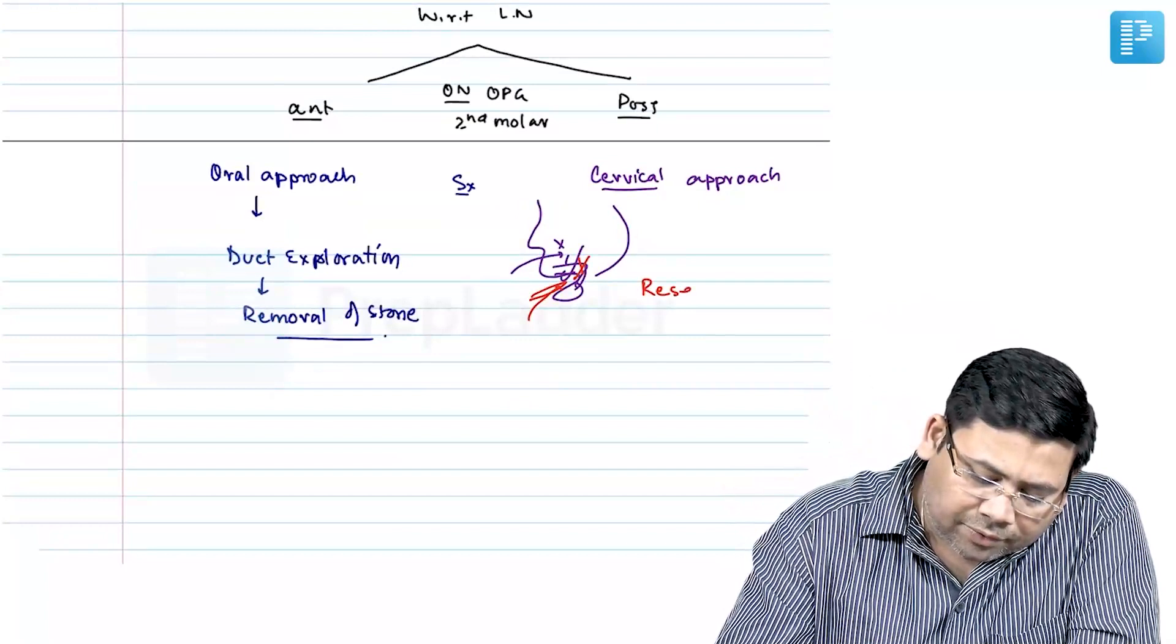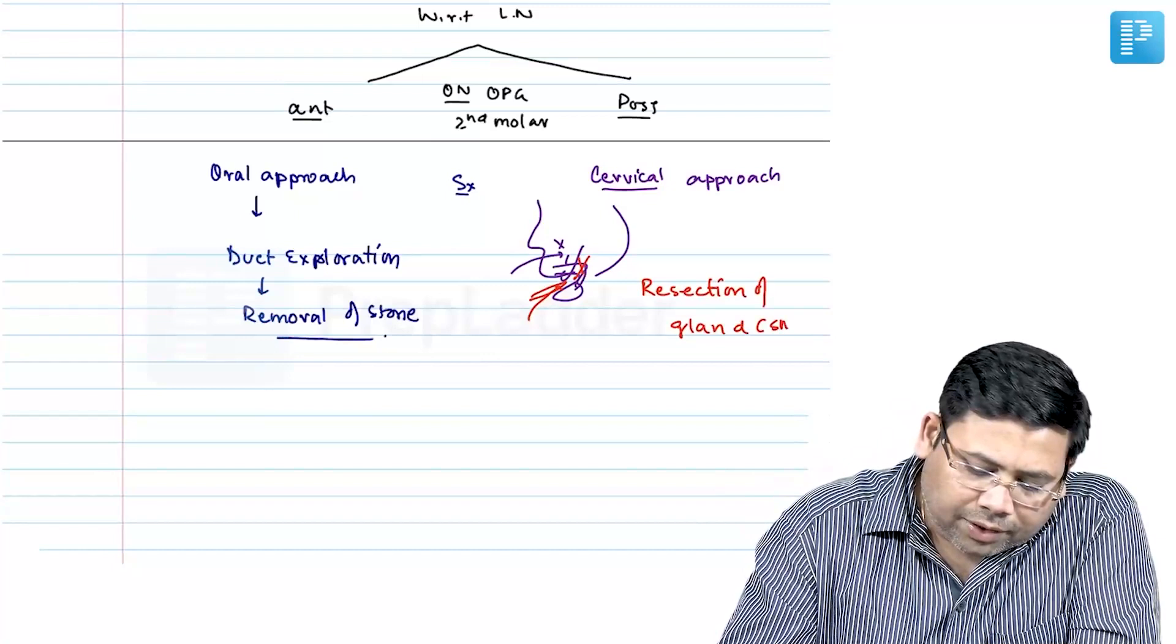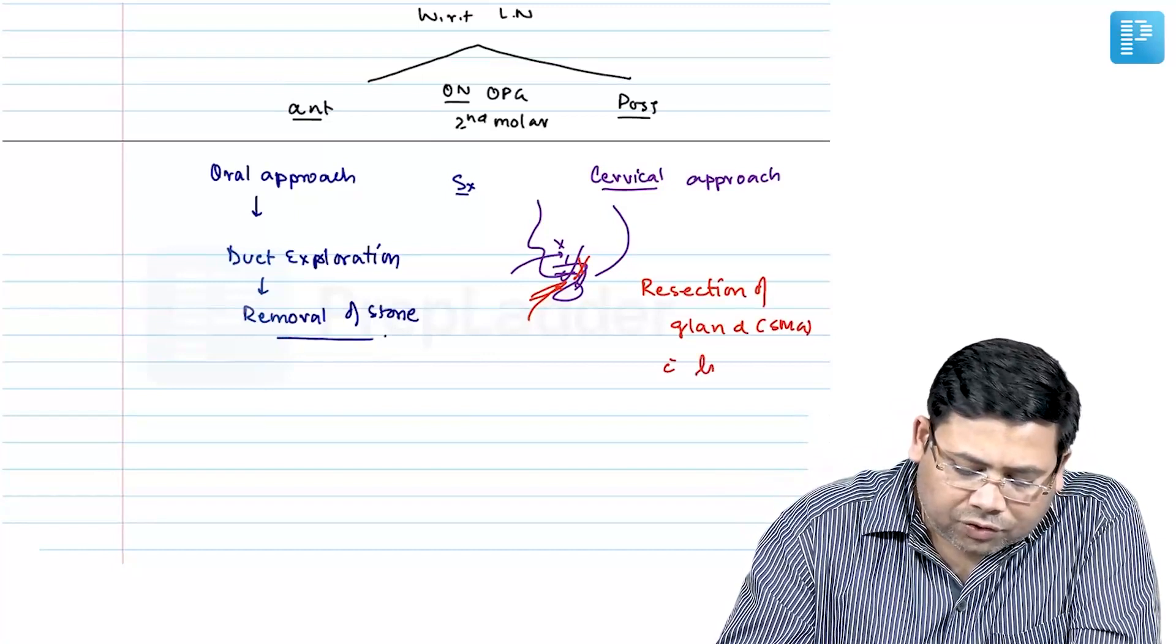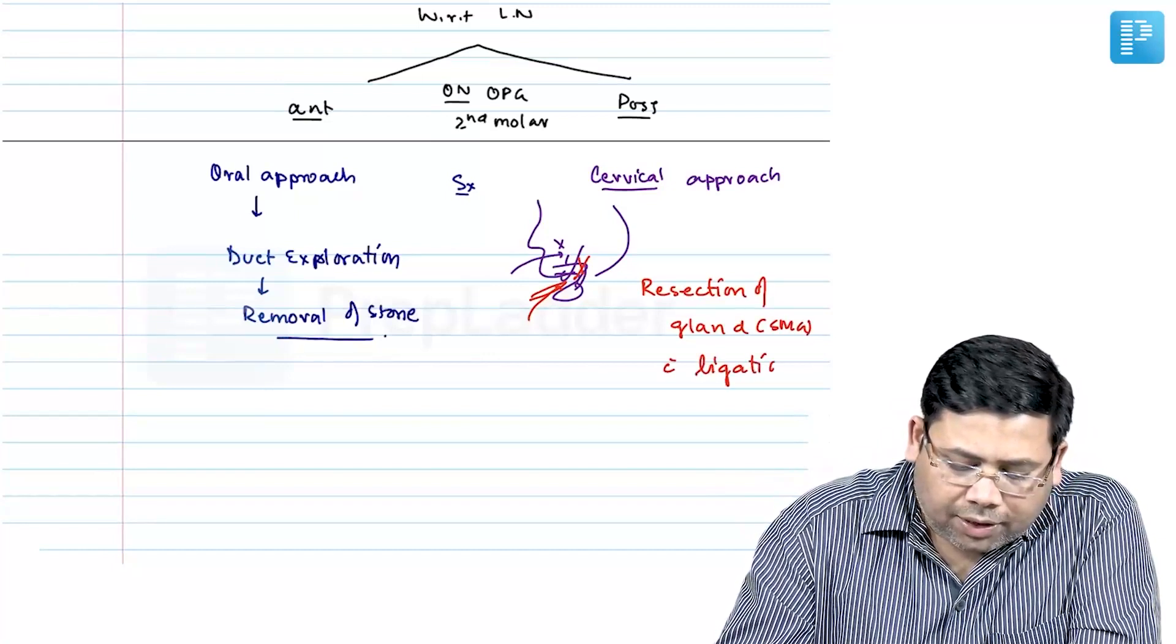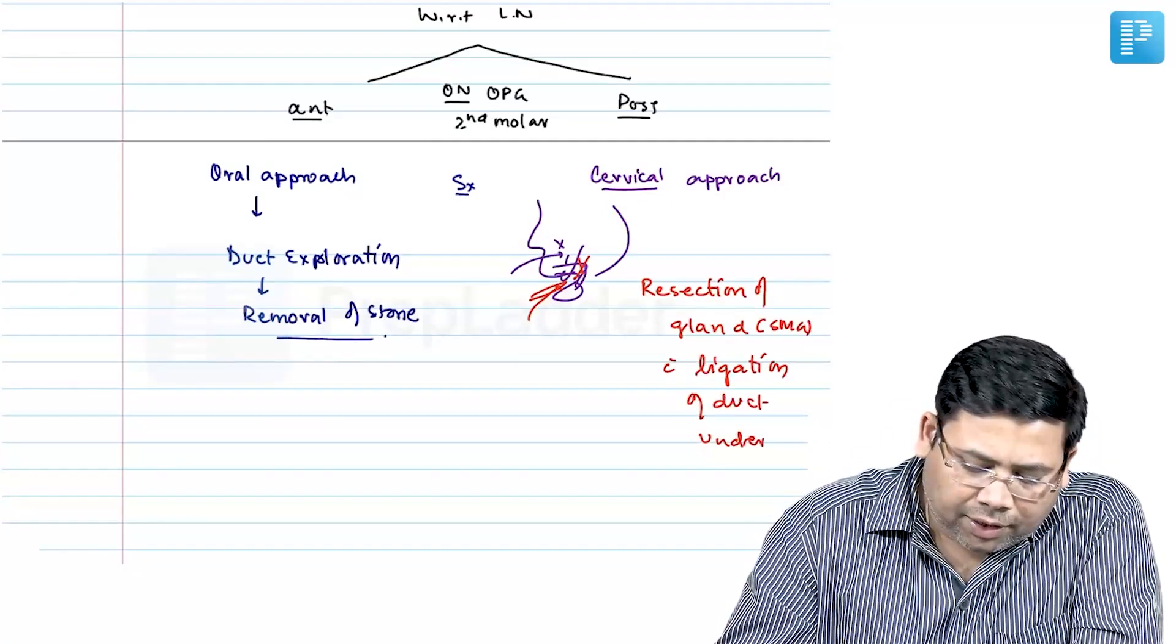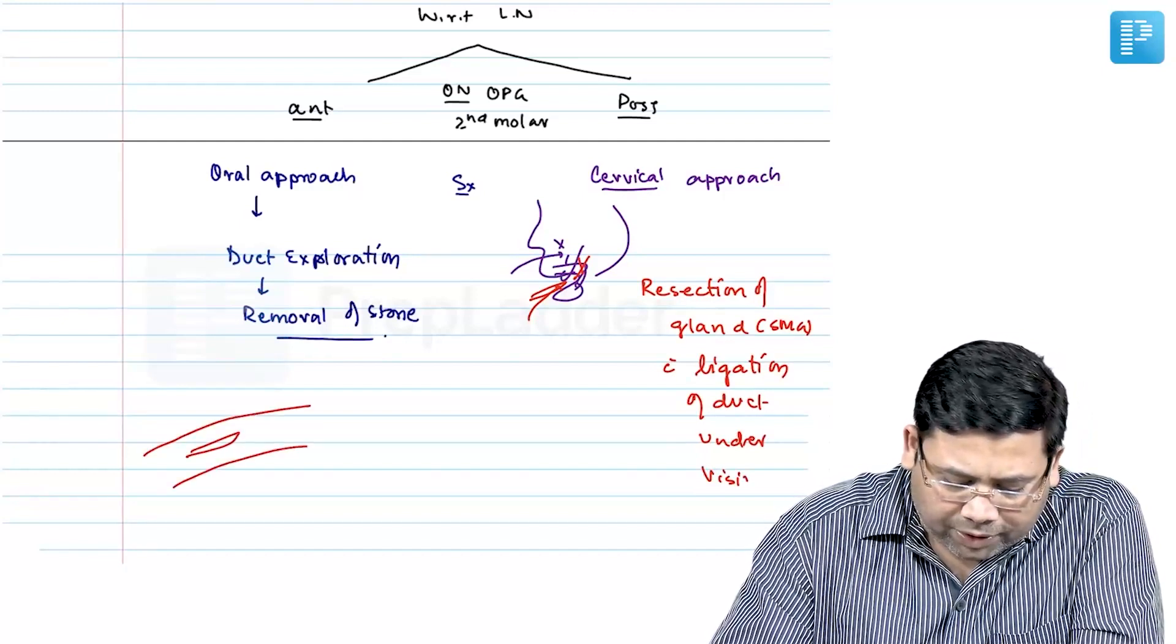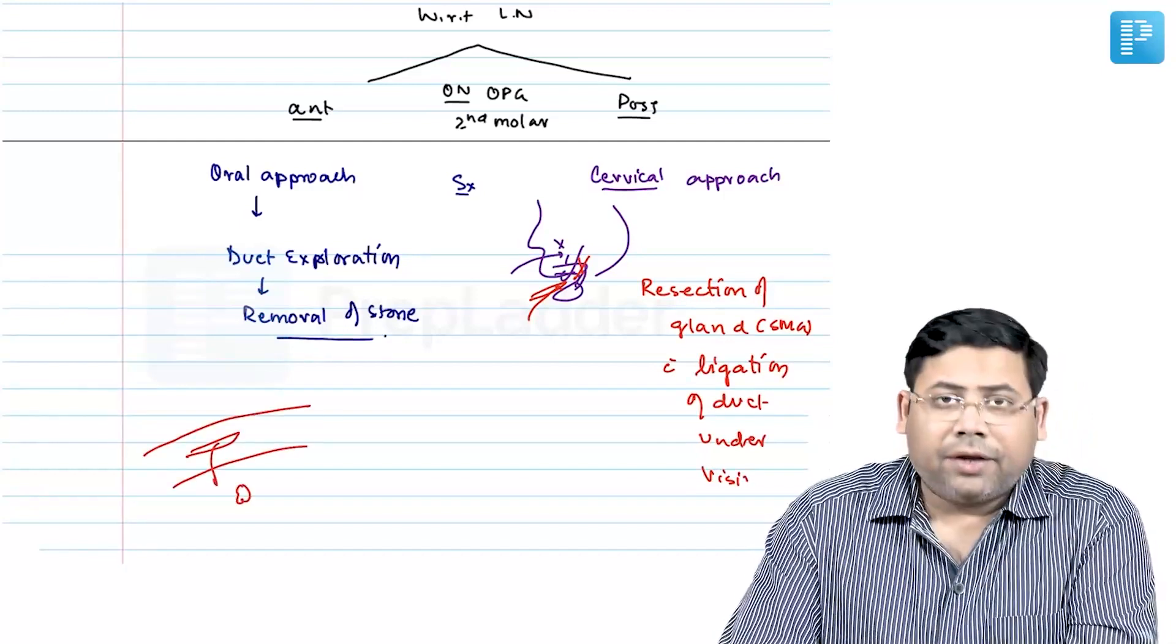So resection of the gland - submandibular gland with ligation of duct under vision. Here what did you do? In this oral approach, you went inside, you opened the duct, you took out the stone.